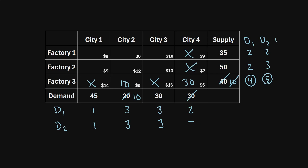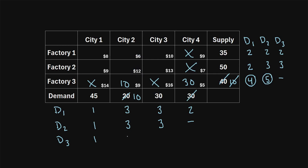Moving to the next iteration, we calculate the differences among the rows again. Row one: lowest is six, next lowest is eight, difference is two. Row two: lowest is nine, next lowest is twelve, difference is three. Factory three's row is done. Among the columns for iteration three: column one has a lowest of eight and next lowest of nine, difference of one. The next column has a lowest of six and next lowest of twelve, difference of six. The next column has a lowest of ten and next lowest of thirteen, difference of three. The last column is already done.